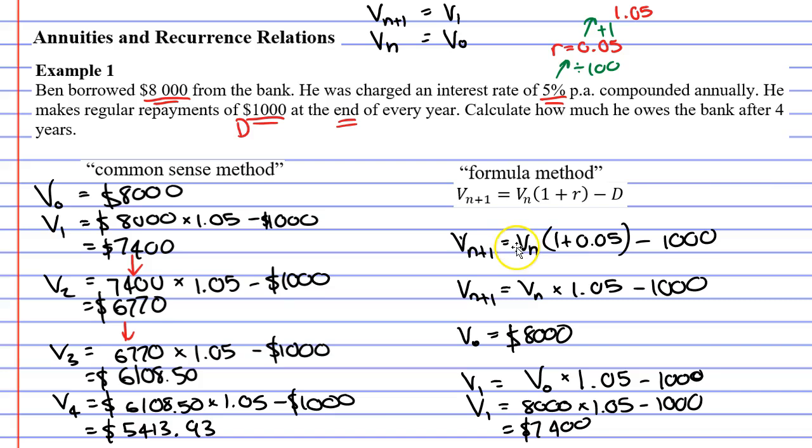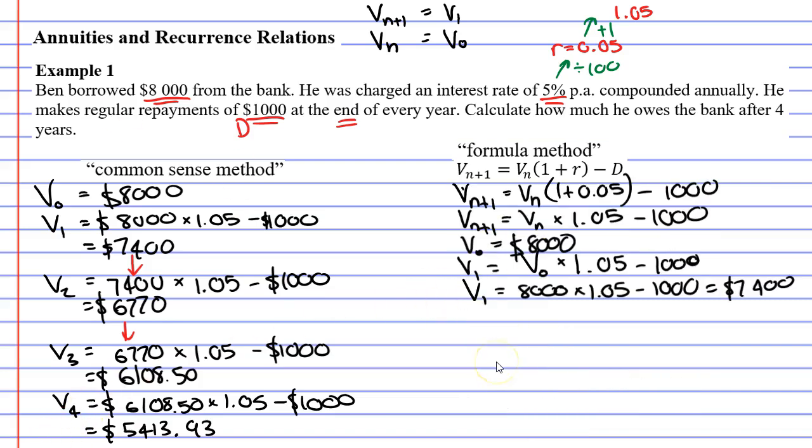So I'm going to make some room and I'm going to finish this off using the formula method. So if we're going to find V2, we know that on the right it's going to have a subscript, one less than that. It's going to be V1 and that the numbers stay the same. It stays as 1.05 and our repayment stays as 1,000. What do we do now? Well, we know V1. V1 is 7,400. So we're going to replace V1 with 7,400. We're going to multiply it by 1.05, and we're going to subtract 1,000. We can see that our calculation here for V2 is exactly the same as the common sense method once again. So we know that it's going to come out as $6,770 for V2.